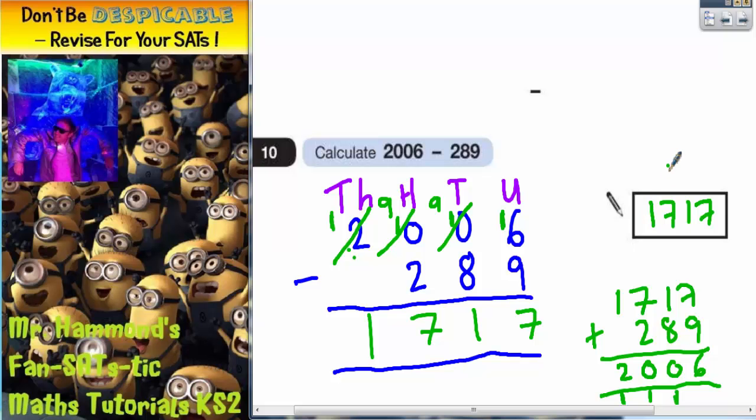1717 is the correct answer, but that was a particularly sneaky one because of the zeros in the middle of the calculation.